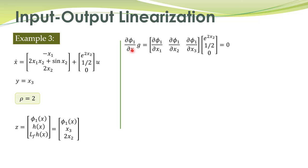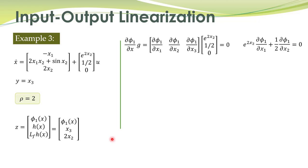phi_1 should satisfy the condition that partial phi_1 over partial x times g equals zero. This is rearranged into a partial differential equation where specific terms multiplied together must equal zero. We want to find the solution of this PDE, which will determine phi_1 of x. We proceed in the same way as in previous examples.